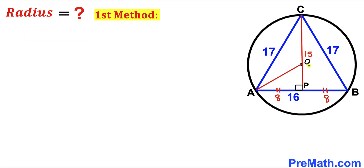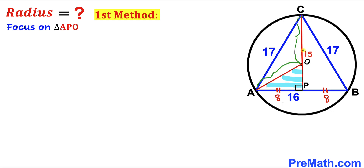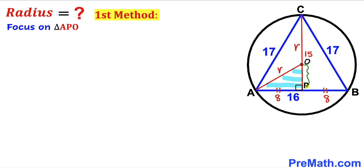Next, I connect center O with point A, giving us right triangle APO. Both AO and CO are radii of the same circle, so I label each as r. Since CP is 15 and CO is r, the remaining segment OP equals 15 minus r.